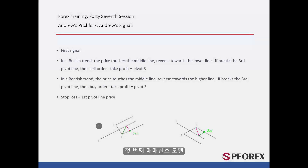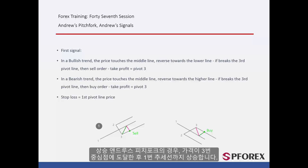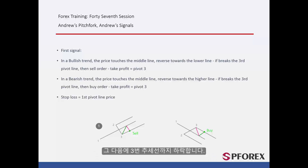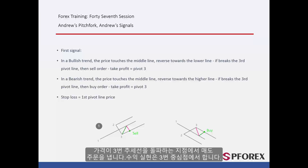First signal model. In a bullish format, after a price has reached the third pivot, it will increase until the first pivot line. Then, the price will decrease until the third pivot line. A sell order can be placed on this breakout point with TP equal to the third pivot price.